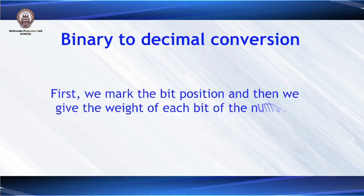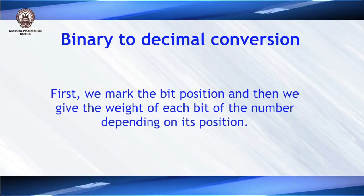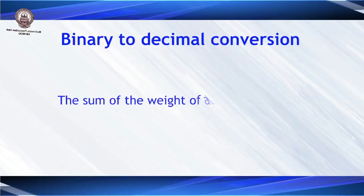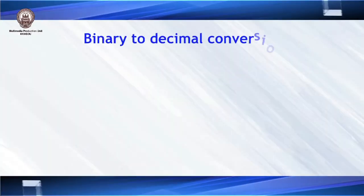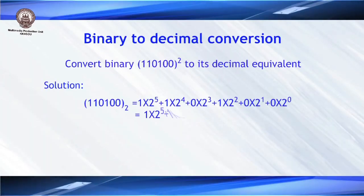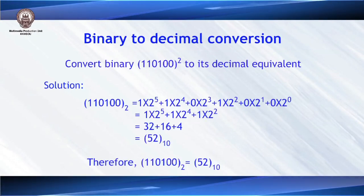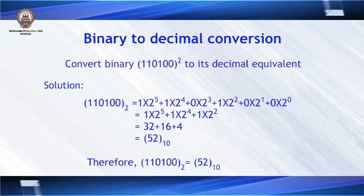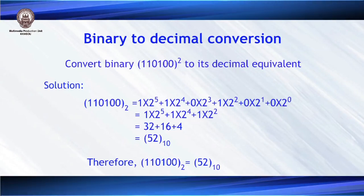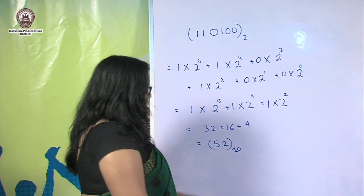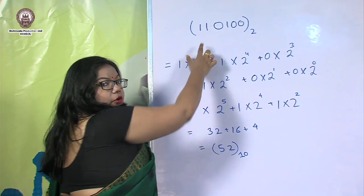First, we will convert a binary number into a decimal number. For this, we mark the bit positions and give each bit a weight based on its position. Then we sum all the weights to get the equivalent decimal number. Let us look at an example: we are trying to convert the binary number 110100 to its decimal equivalent.